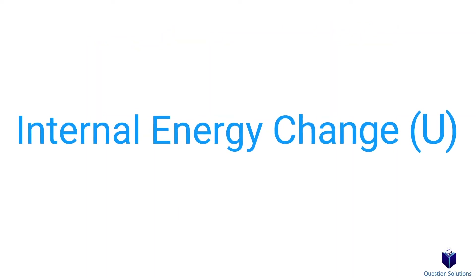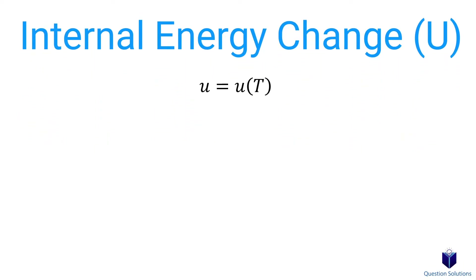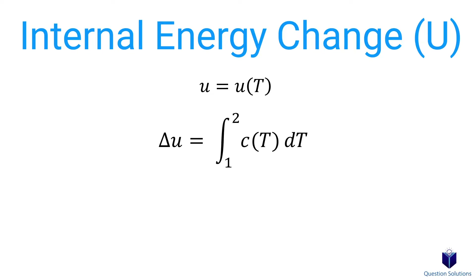For incompressible substances, just like for ideal gases, the internal energy is only dependent on temperature. To find the difference in internal energy, you can use this equation. Here, we're integrating the specific heat equation given with respect to temperature, since specific heat varies by temperature.